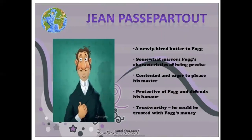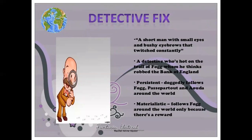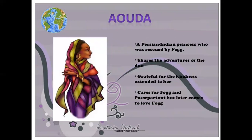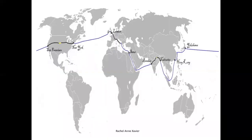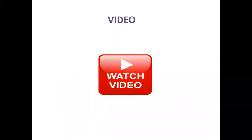He was a trustworthy man. Can you see the picture of Passepartout? Now next is Detective Fix. He was a short man with small eyes and bushy eyebrows. He was a detective and was after Mr. Fogg as he thought he was the bank robber. He wanted to catch Fogg so that he could get the reward. The next main character is Mrs. Aouda. She was an Indian princess who was rescued by Mr. Fogg. She was beautiful and sweet and shared the journey with Mr. Fogg, and later she started loving Mr. Fogg. This is the map and the stops from which they went through in their journey.